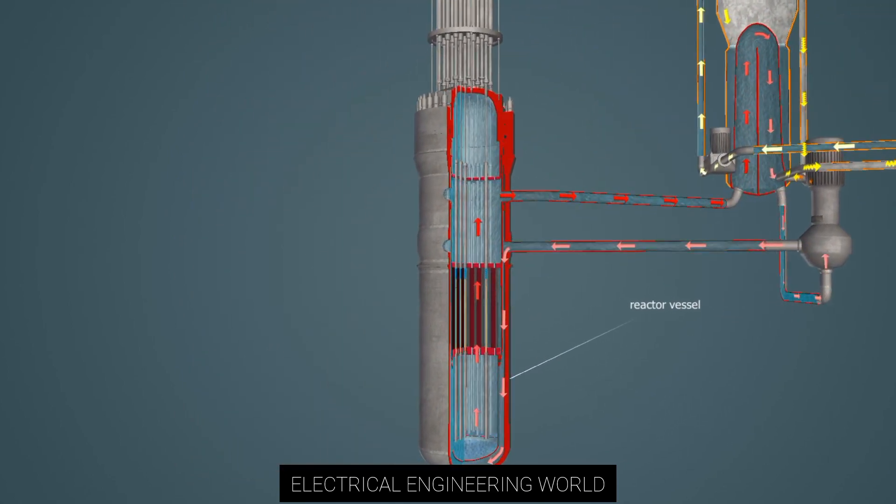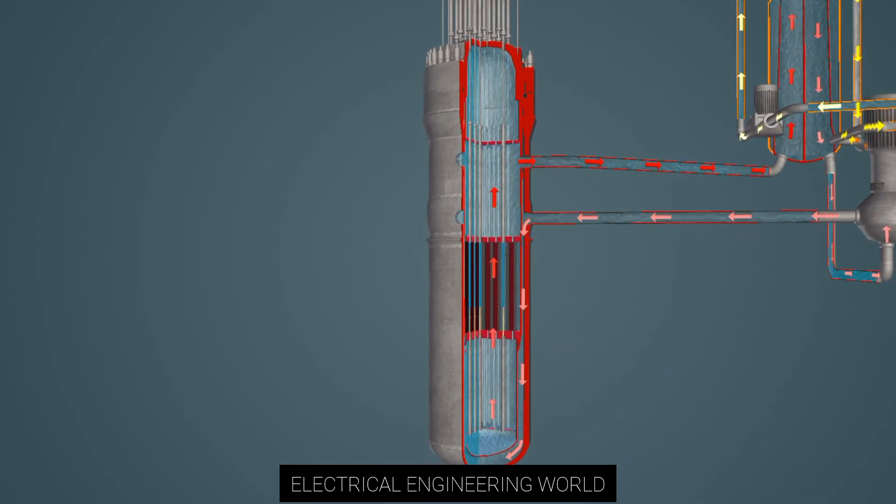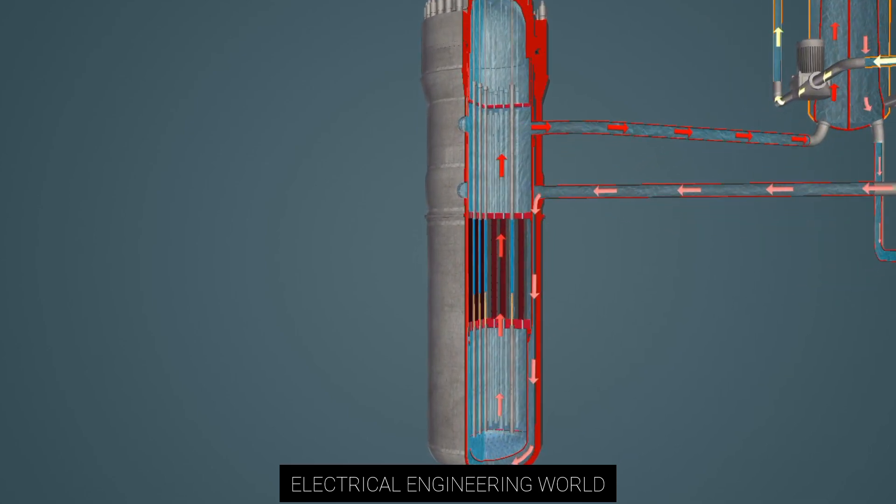The reactors house a controlled chain reaction. Uranium atoms absorb neutrons and then split, releasing two or three neutrons and energy.